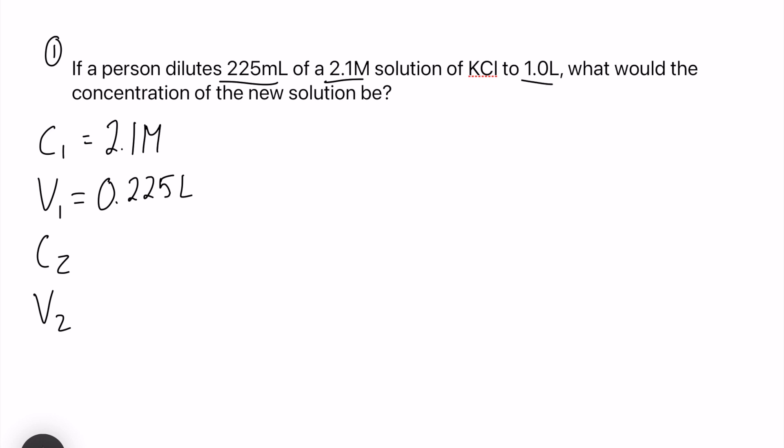Next up we look at our second volume here, it looks like it's going to be 1.0 liters. Let's fill that out and it looks like we are looking for our second concentration in the question. So we are going to line this all up: we have C1 V1 equals C2 V2 and we are solving for C2, therefore we should isolate for it.